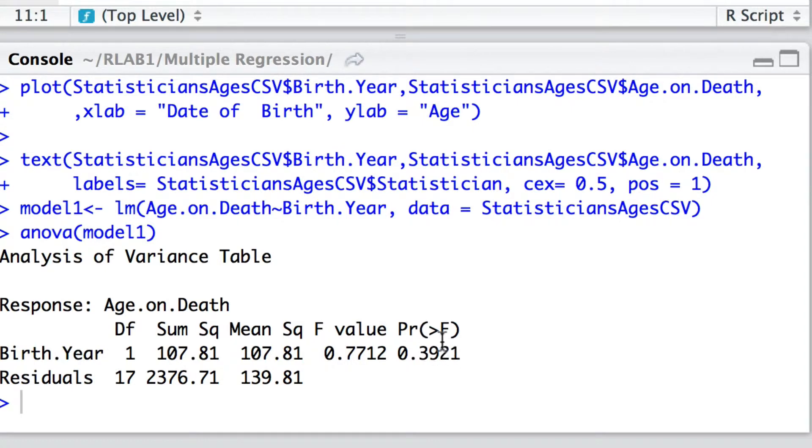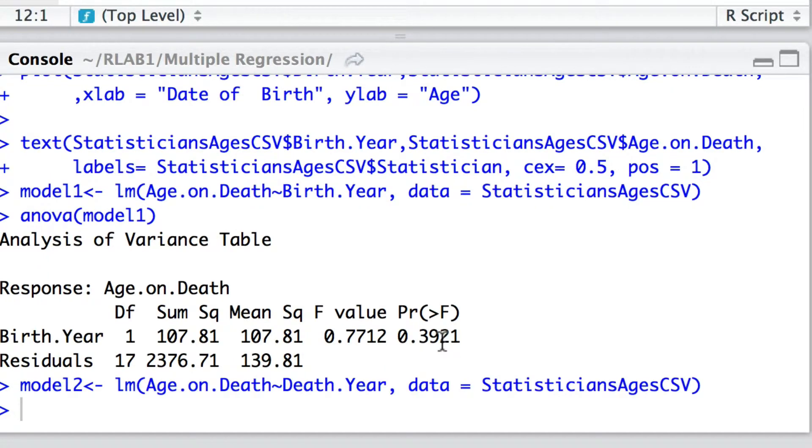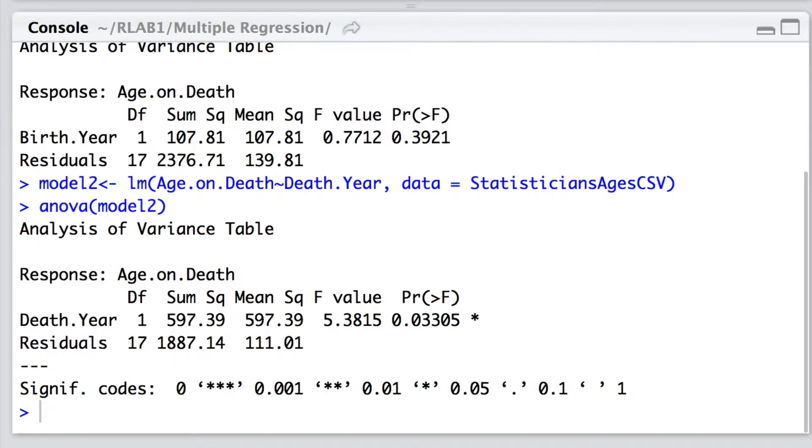So now let's move on and actually look to see whether the death year might influence the age on death. So here we're going to fit another linear regression model with age on death to see whether it might be dependent on the death year. So here is the analysis of variance table after fitting that simple linear regression model.